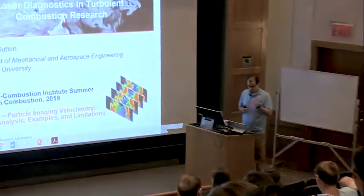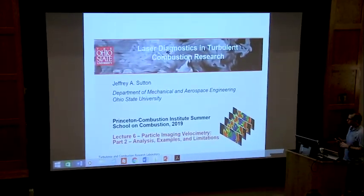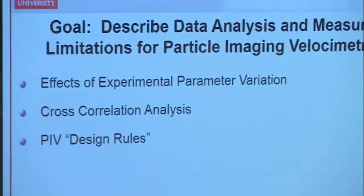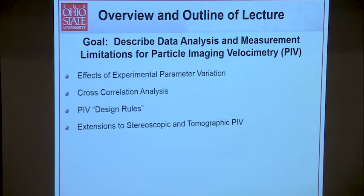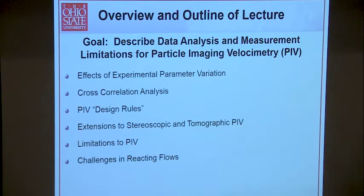We're going to start on Lecture 6, the last one for today, and it's Part 2 of PIV analysis examples and limitations. Our goal is to describe data analysis. Last lecture covered the hardware - lasers, optics, and particles. Now we'll look at data analysis, measured limitations, cross-correlation analysis, the classic PIV design rules, how you set up an experiment, extensions to stereo and tomographic PIV, and limitations in terms of spatial resolution.